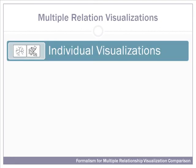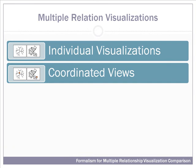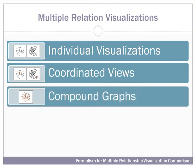Multiple relation visualizations have been explored in the past, including individual visualizations in which comparisons are made manually, coordinated view visualizations in which brushing and linking are used to do interactive highlighting across different representations of the data, and compound graph visualizations in which the spatial structure is based on a single primary relationship within the data and the secondary relationships are drawn atop it.